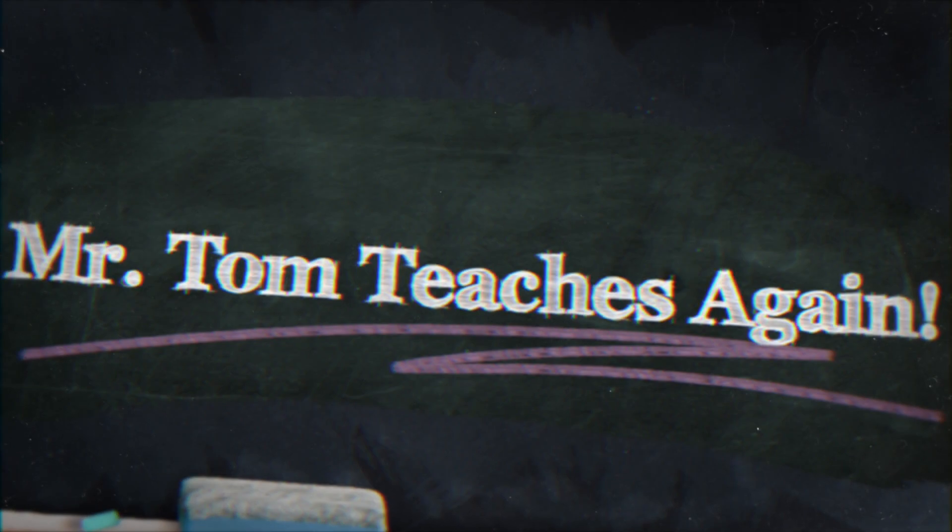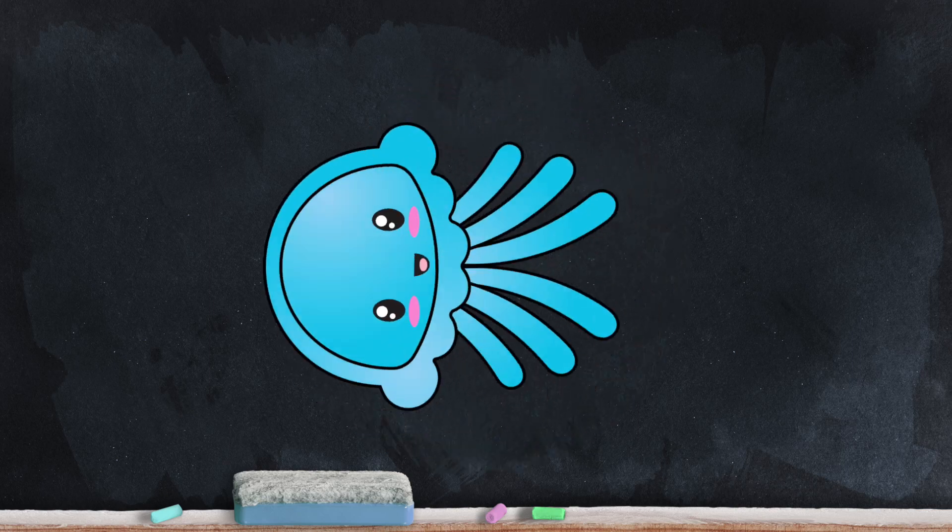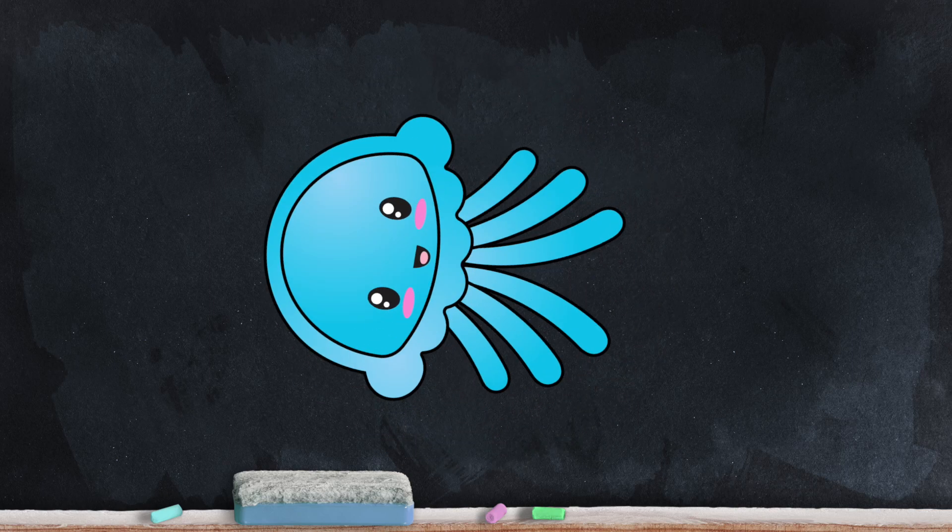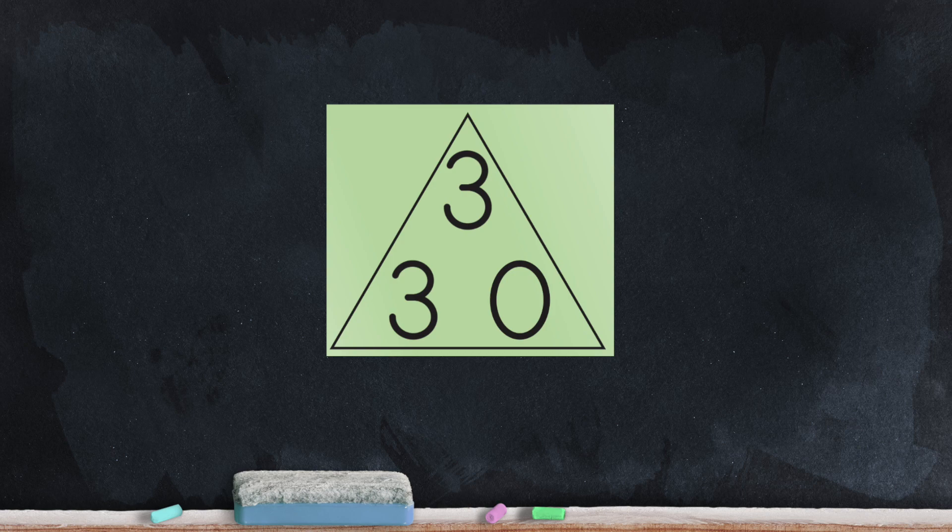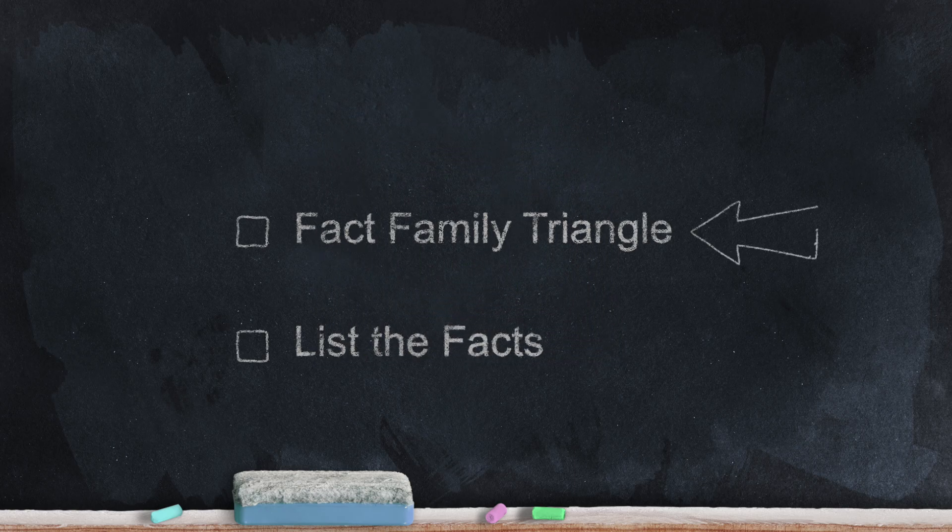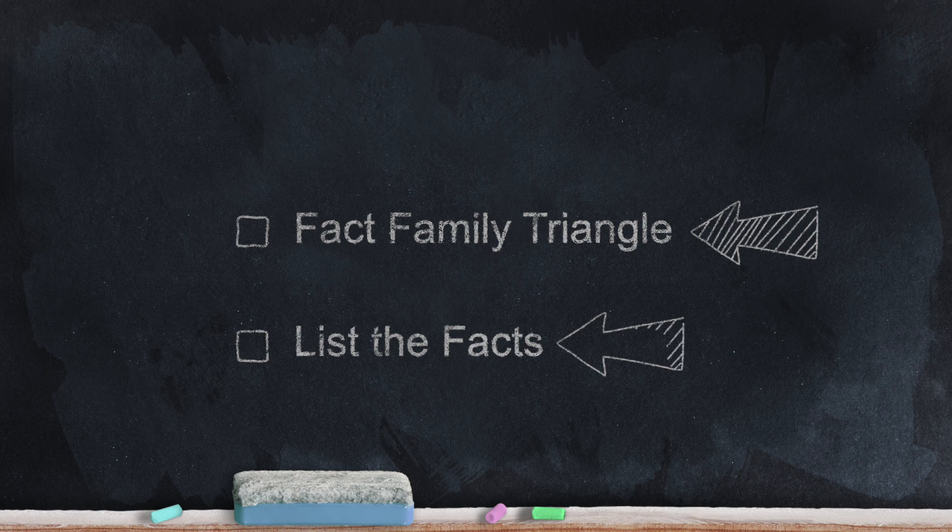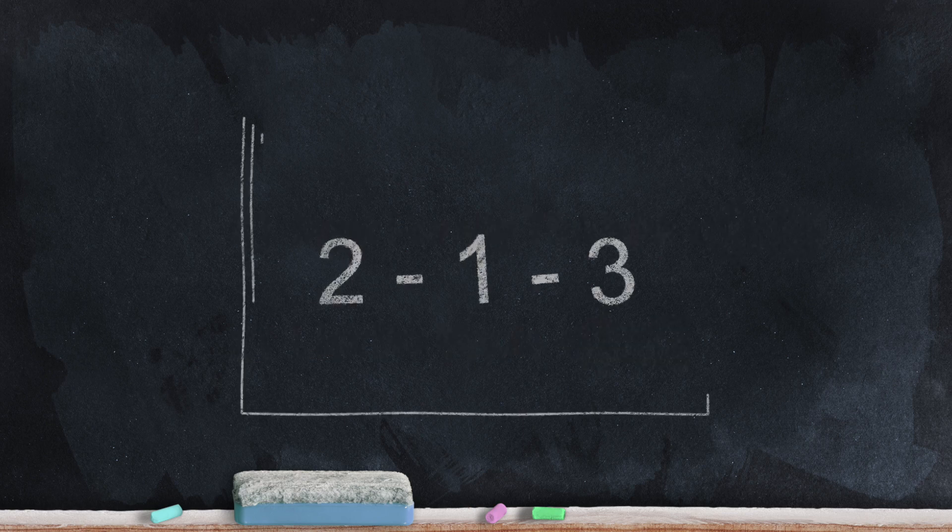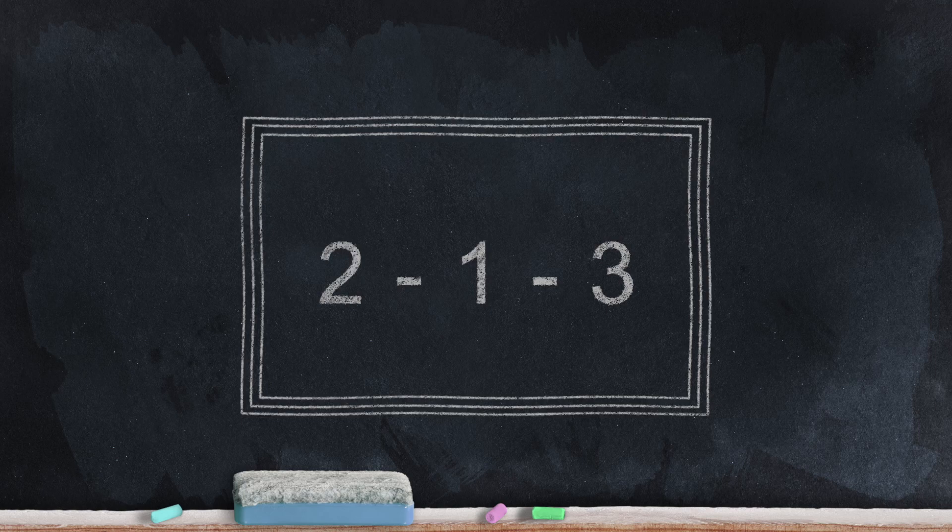If you recall, when we last talked about fact families, we met Joey Jellyfish, and he showed us about the Fact Family 3, 3, 0. Today, we're going to take a look at a different fact family. We'll explore a fact family triangle and list our new facts. So, let's get started with Fact Family 2, 1, 3.